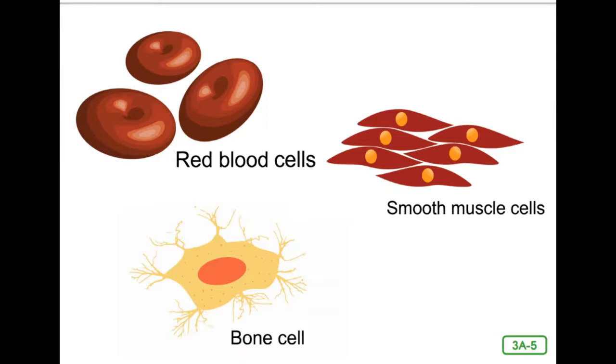The human body is a collection of more than 200 different types of cells. Cells come in all shapes and sizes depending upon the jobs they must perform.